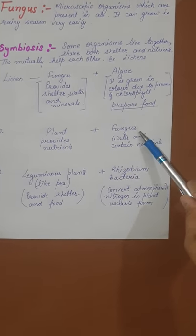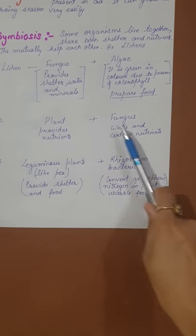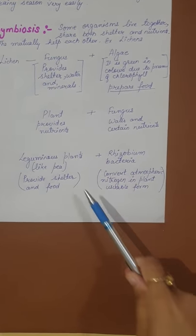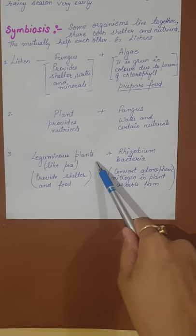The second example is plant and fungus. Plants provide nutrients and fungus provides water and certain nutrients. So they are helping each other.